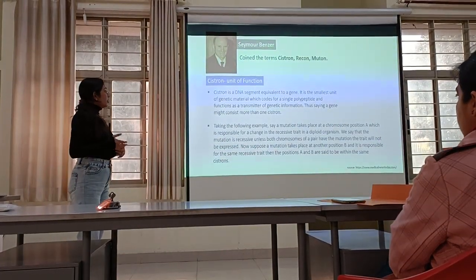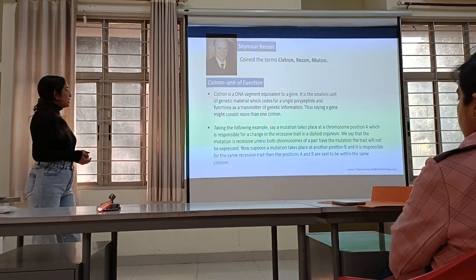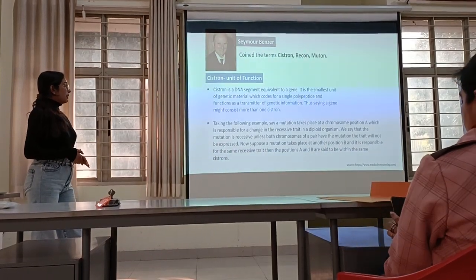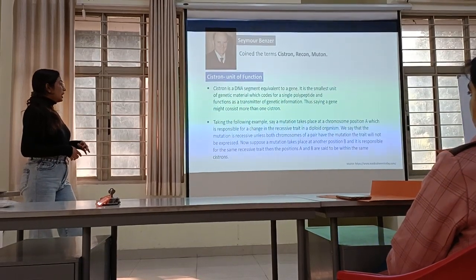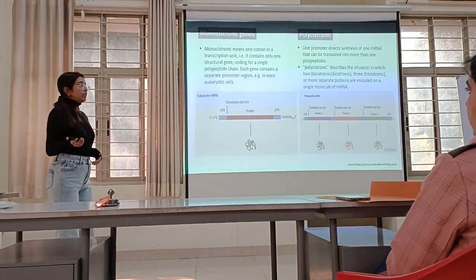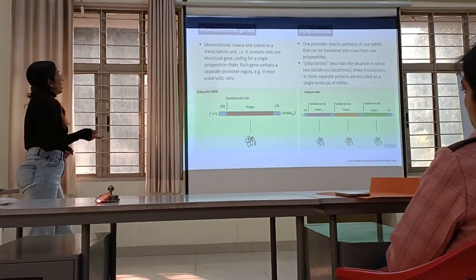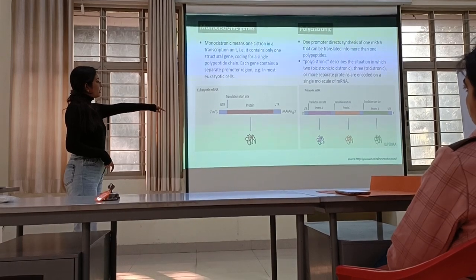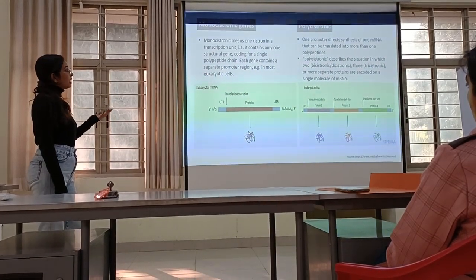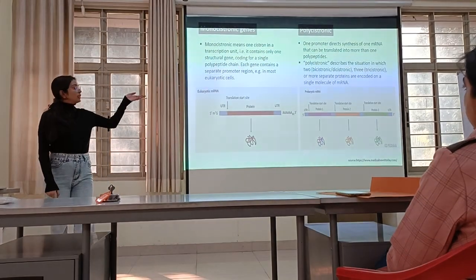For example, if a mutation takes place at chromosome position A, which is responsible for a recessive trait in a diploid organism, the mutation is recessive unless both chromosomes have the same mutation — the trait will not be expressed. If a mutation takes place at another position B, responsible for the same recessive trait, then positions A and B are said to be on the same cistron. Cistrons are divided into two categories: monocistronic, which means the transcription unit contains only one gene segment coding for one type of protein; and polycistronic, in which two or more separate proteins are encoded in a single mRNA.